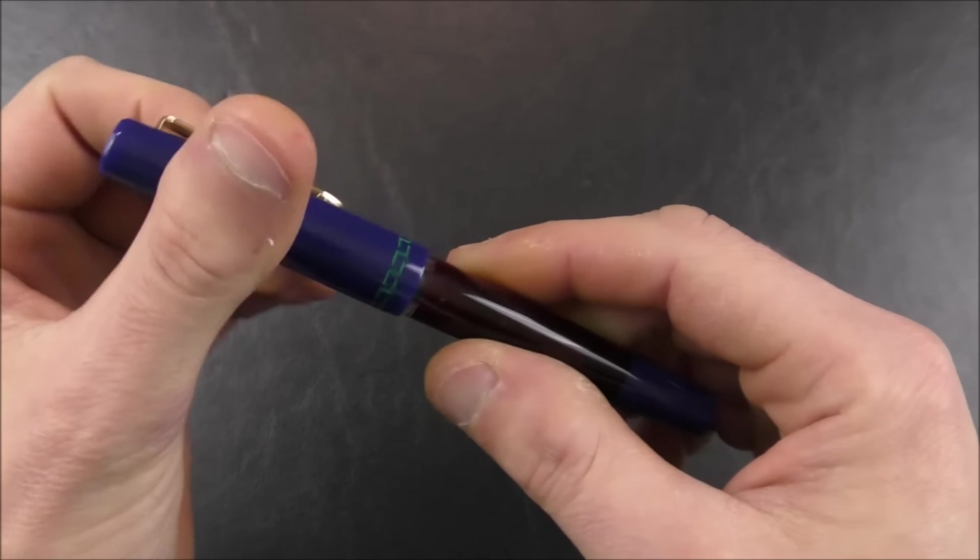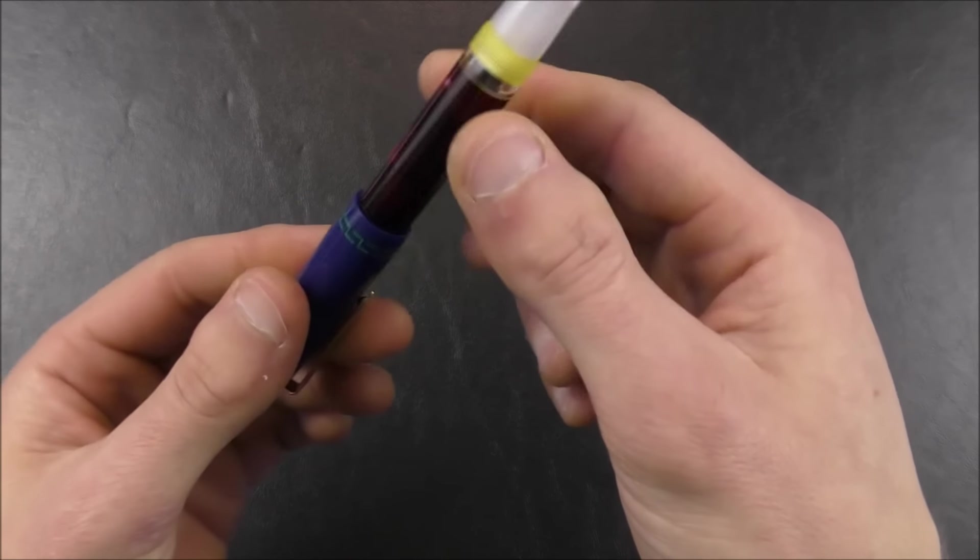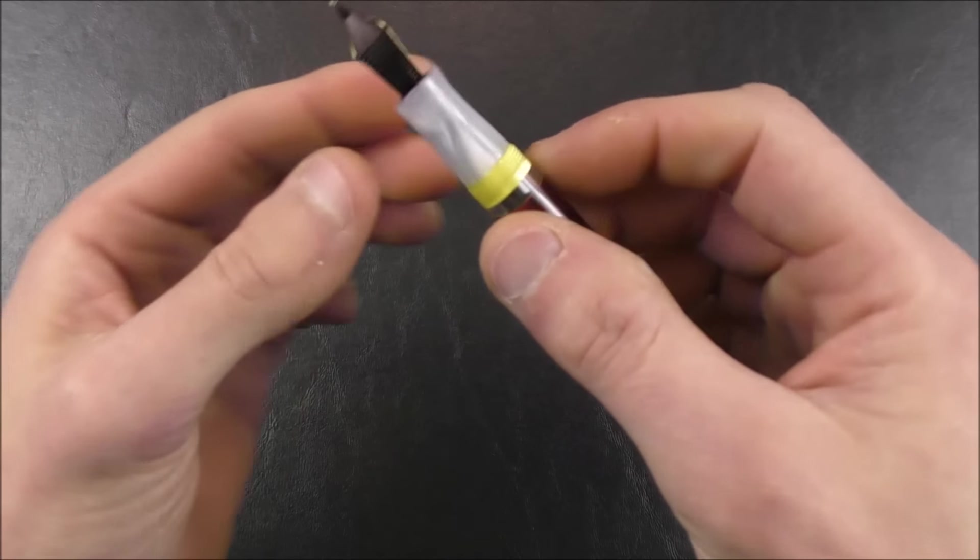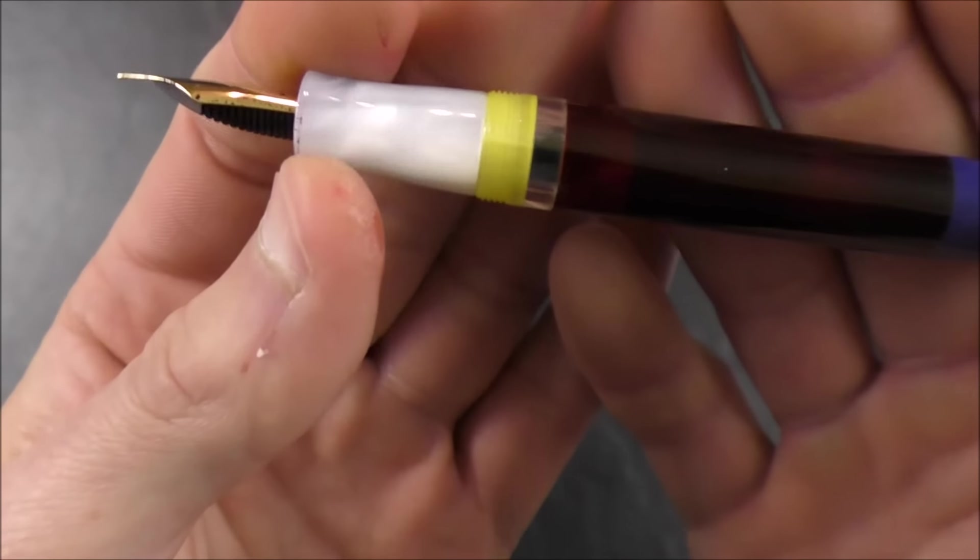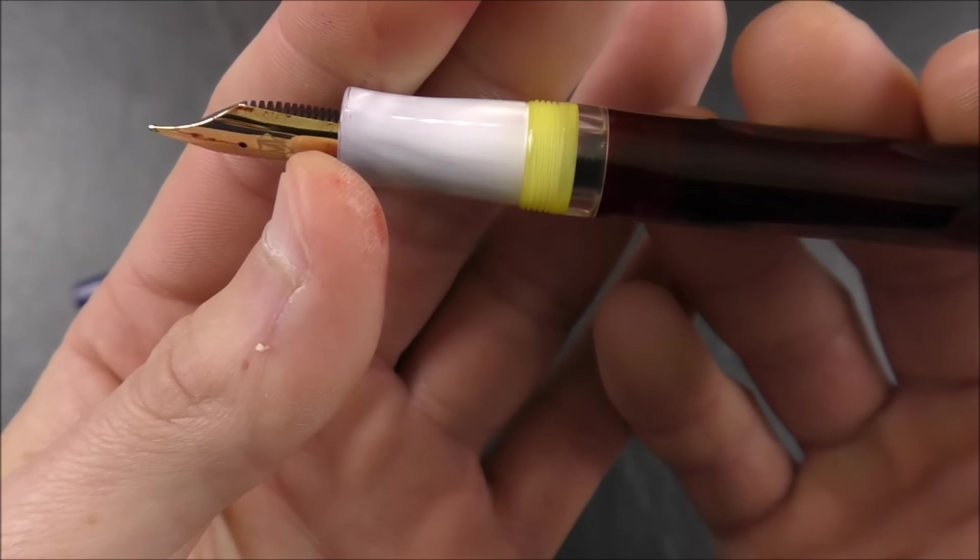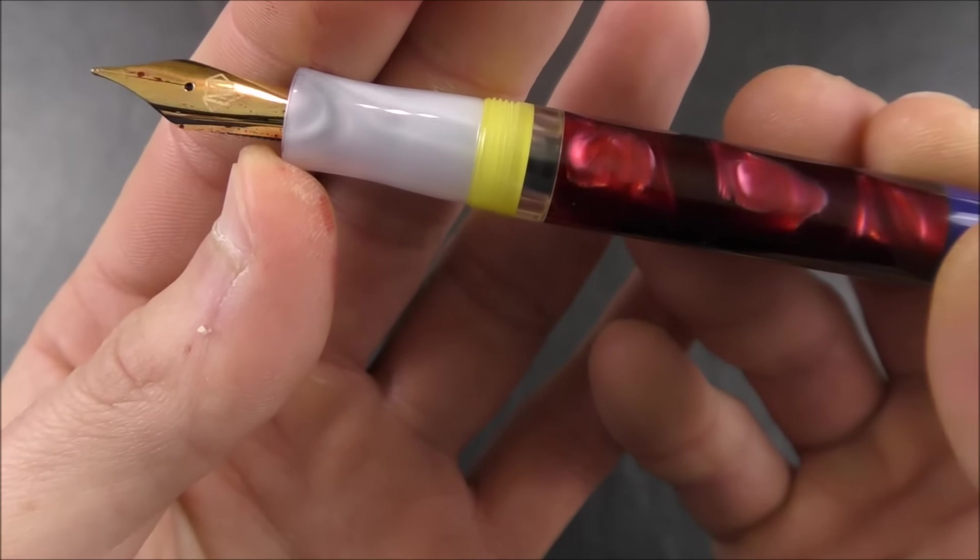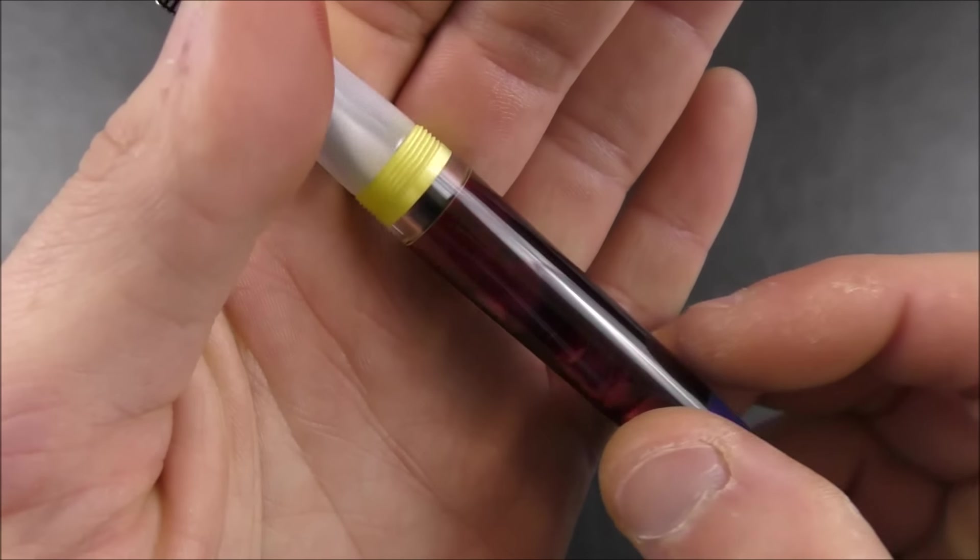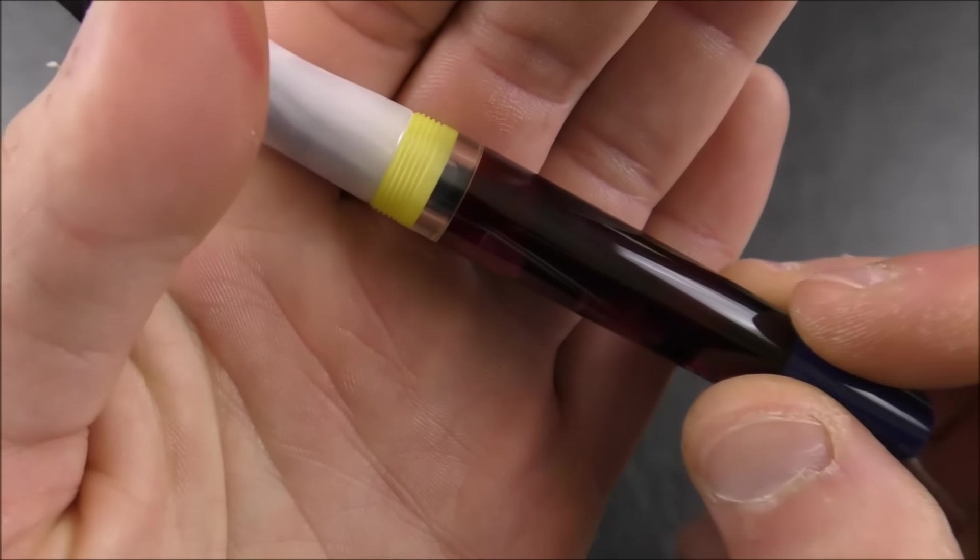If you take off the cap, you can post the pen if you wish. Posts quite nicely and securely. You have the section here, which is made of a different color, sort of that iridescent resin. Quite lovely. You do have an ink view window, which is nice. It's kind of reminiscent of more old-fashioned classic pens.